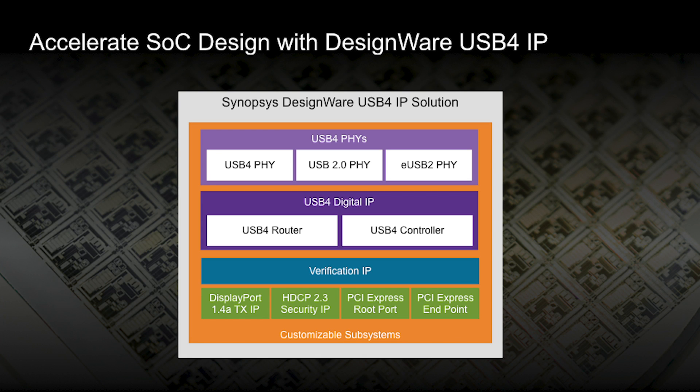To support these new applications, we have a complete solution of USB 4 PHY, router, controller, and verification IP. The first applications for USB 4 are going to take advantage of the latest advanced process nodes, so we'll be providing support for five nanometer as well as six nanometer processes. For the next generation of USB 4 more mainstream designs, we'll also be providing support for the 12 nanometer process node, which will be more economical in terms of process costs.